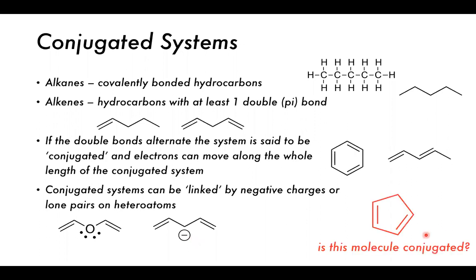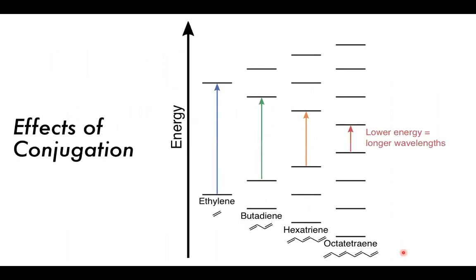What does a conjugated system do? It allows electrons to flow along its length. This changes the energy of the system, how it absorbs light, and its color. Looking at the effects of conjugation: with just one single double bond the energy difference is quite large. As we make a small conjugated system — two double bonds and a single bond — the energy gap decreases. Continuing to increase the size of conjugated systems further decreases the energy difference, shifting absorption to longer wavelengths and changing color.